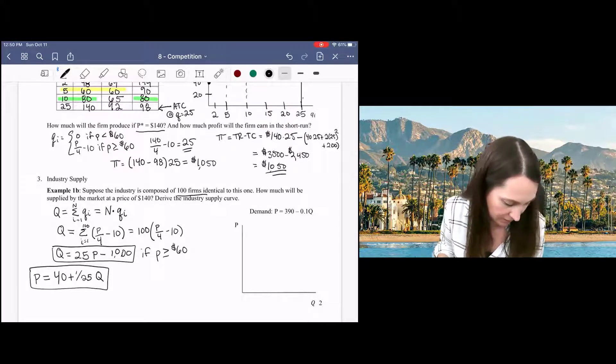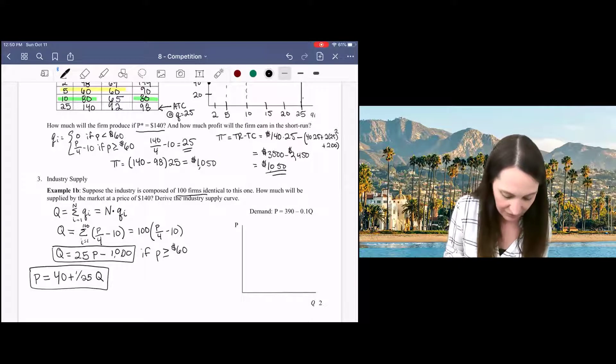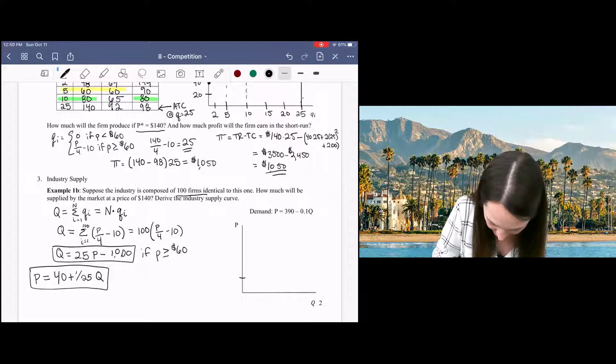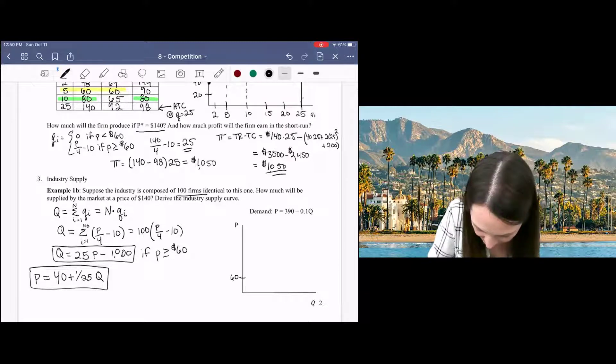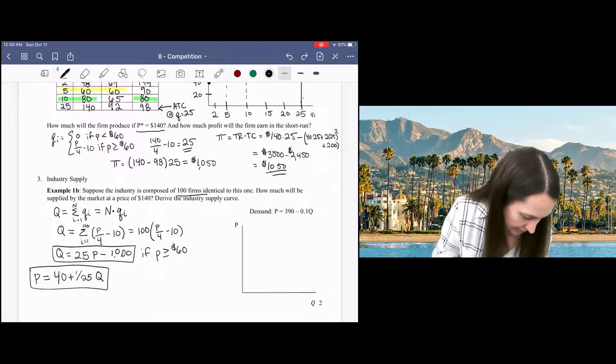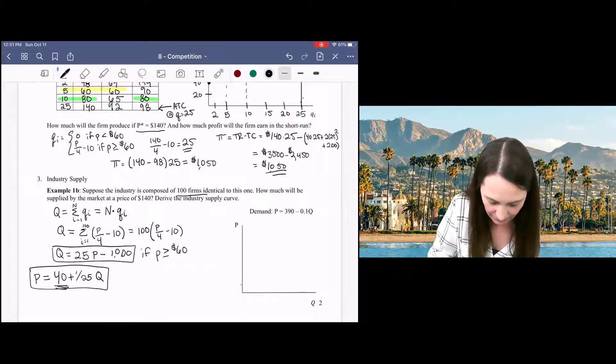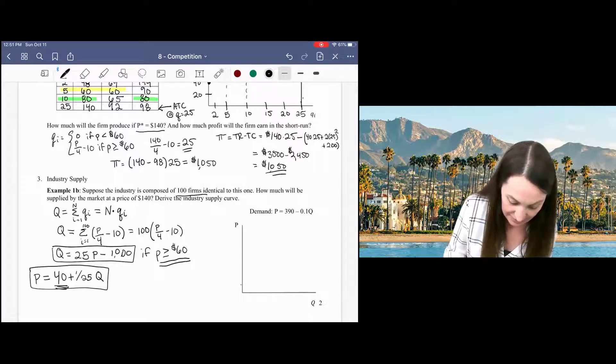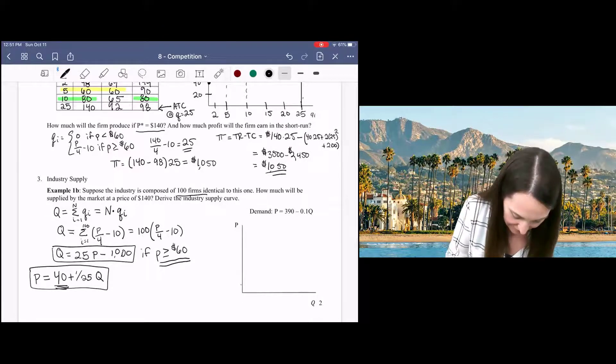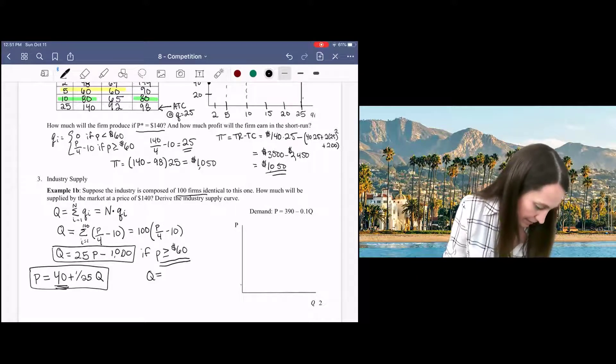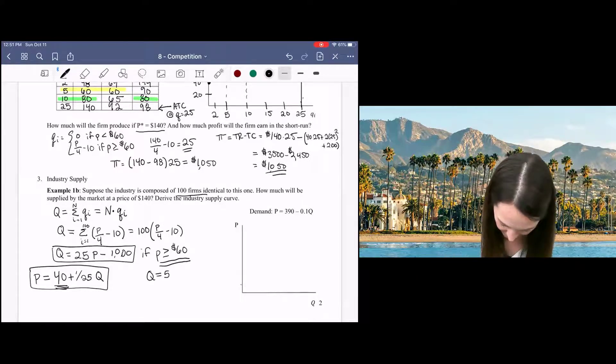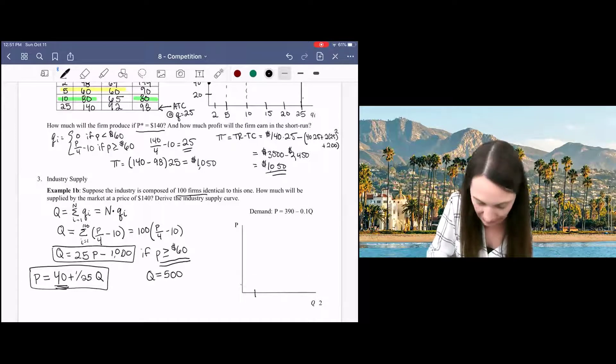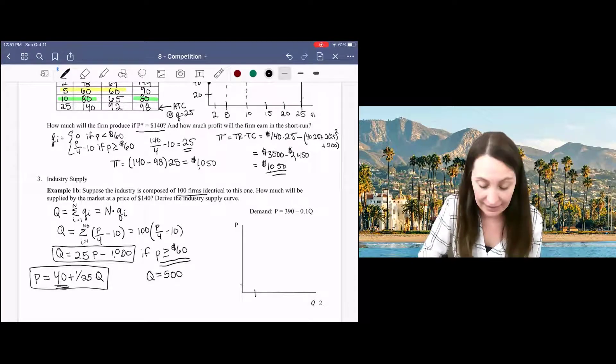And to put that on the graph, we can plug in 60 to see exactly what quantity this is going to start at. So you'll notice that although the Y-intercept is 40, the supply curve will not start until the price is at least 60. So if I put that into my supply curve, I'm going to get a quantity of 500 as the lowest quantity at which there would be a supply in this market.